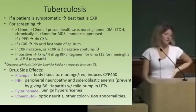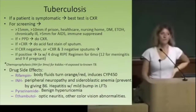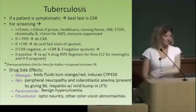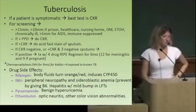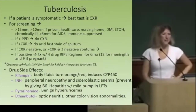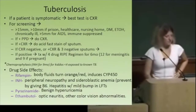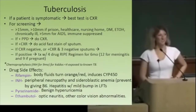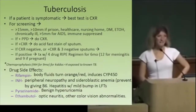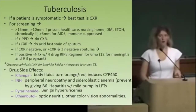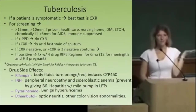Side effects of TB medications: rifampin turns your body fluids reddish-orange and is an inducer of cytochrome P450. INH causes neuropathy, so we give B6 — pyridoxine — with it. Pyrazinamide can cause hyperuricemia but usually not enough to cause gout. Ethambutol causes optic neuritis — E for Eye symptoms with ethambutol.